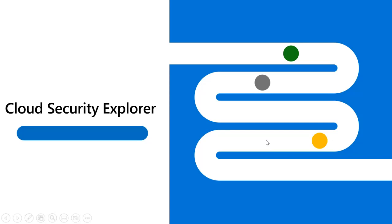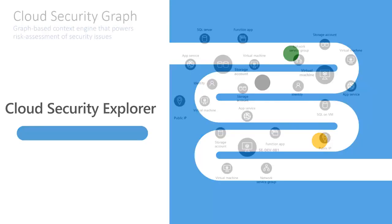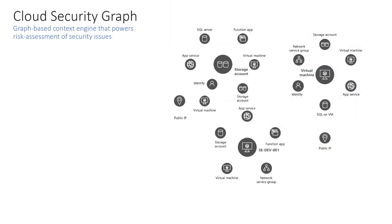Now let's go to the Cloud Security Explorer. Adding context to existing information adds more value and helps us make more informed decisions. The platform behind contextual security is the cloud security graph — a graph-based context engine that exists within Defender for Cloud. It collects data from various sources about your cloud resources, not only in Azure but also multi-cloud resources, including how these resources are connected, whether they're exposed to the internet, what identities and permissions are associated, and what vulnerabilities exist on them.